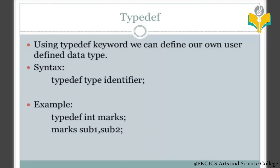The syntax for typedef is: typedef, then the existing data type (such as integer, float, or double), followed by a new identifier name. For example, typedef int marks — this creates a user-defined type called marks.